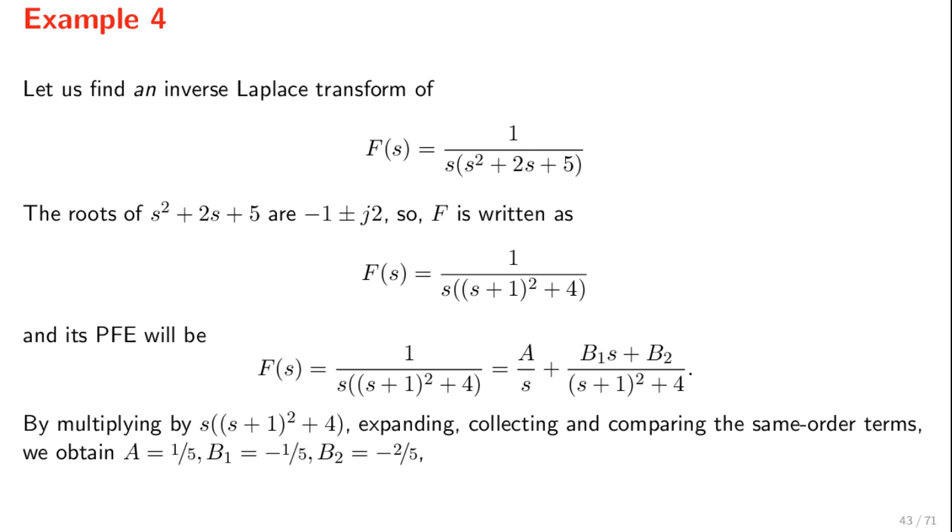We can now multiply both sides of this equation by s times s plus 1 squared plus 4, and after expanding, collecting, and comparing the coefficients of terms of the same order, exactly as we did before, we end up with a linear system, and we can obtain the values of a, which is one-fifth, b1, which is minus one-fifth, and b2, which is minus two-fifths.